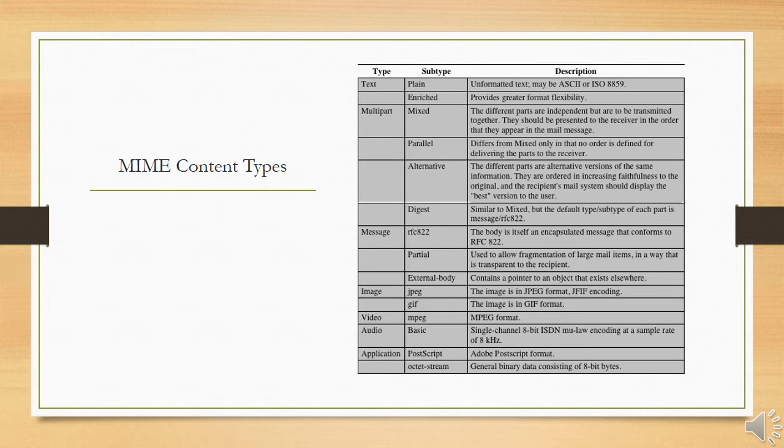The multi-part type indicates that the body contains multiple independent parts. The content type header field includes a parameter called a boundary that defines the delimiter between the body parts. This boundary should not appear in any parts of the message.